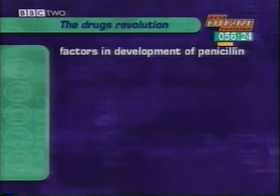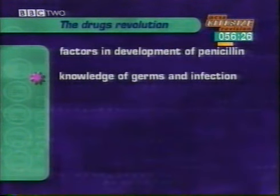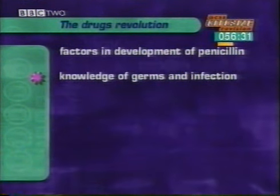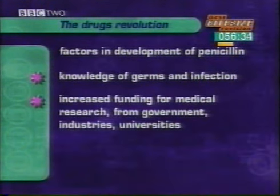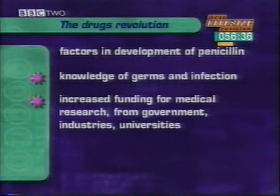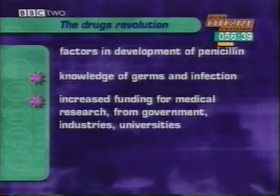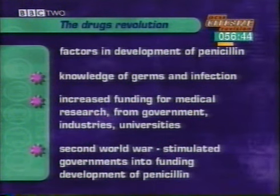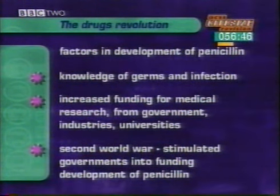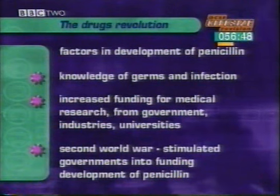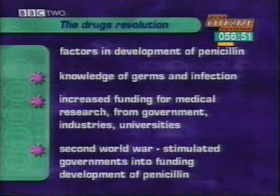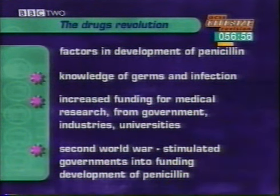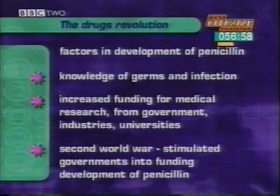Here are some of the factors you might have listed. Knowledge — scientists would not have thought of this treatment before they knew about germs and infection, building on the work of Pasteur, Koch and Ehrlich. Medical research was increasingly expensive, with funding increasingly coming from government, industry or wealthy universities. The Second World War and its thousands of casualties stimulated governments into funding the mass production of penicillin. The success of penicillin was the first in a series of new drug discoveries that one by one enabled doctors to prevent or cure some of the most feared diseases.